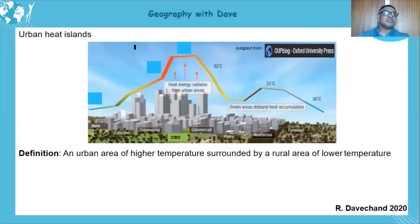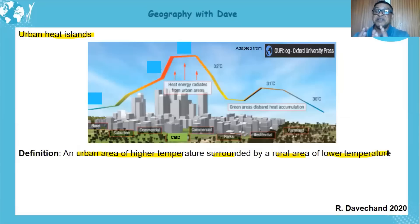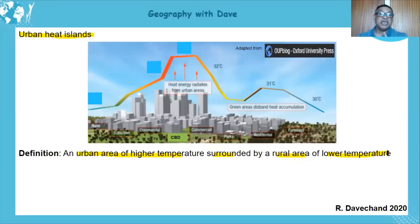We come across a concept known as urban heat islands. How do we define it? An urban area of higher temperature surrounded by a rural area of lower temperature. It's like an island — not a normal island which is a piece of land surrounded by water, but here we have a hot area surrounded by a cooler area, the hot area being the urban area and the cooler area being the rural area.